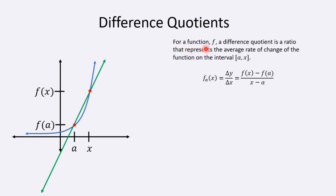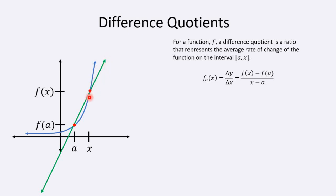Difference quotients: for a function f, a difference quotient is the ratio that represents the average rate of change of the function on the interval from a to x. This function is defined on that interval from a to x on the x-axis. The difference quotient represents the slope of this secant line — the green line is secant to the curve because it intersects the curve at two places, and its slope represents the average rate of change of the function.